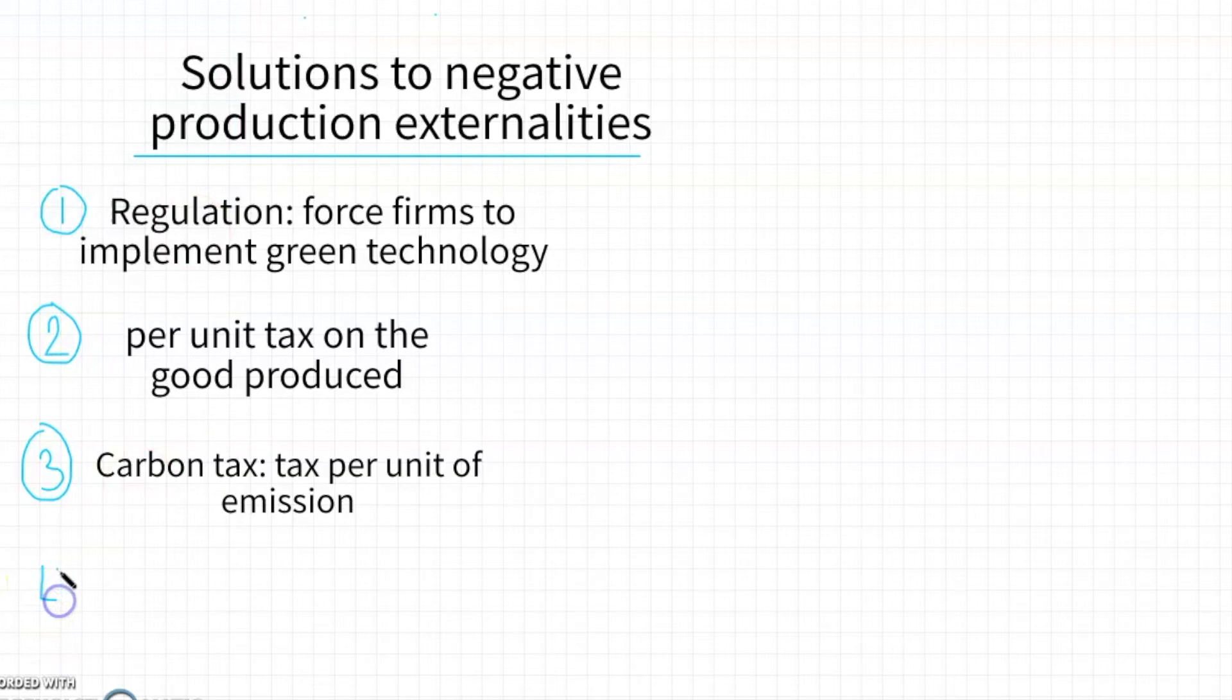Whereas if you implement a carbon tax, a tax per unit of CO2 emission that the producer emits while producing, then this actually creates a lasting incentive for the producer to switch to more green technology so that they can produce more and more with less emissions. This ideally will create a situation where the most cost competitive firm is the firm that can produce the most units of output per unit of CO2 emission.